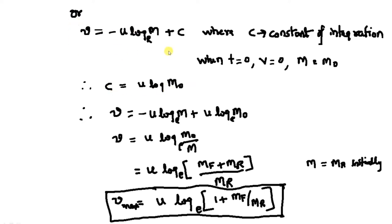You can get rid of this constant of integration by applying boundary conditions. Before launching, when t equals zero, the entire rocket is at rest so v equals zero, and the instantaneous mass of the rocket becomes m0, the initial mass. Substituting these boundary conditions, C equals u times log m0 to the base e. Therefore, replacing C, the velocity v equals u times log m0 divided by m to the base e. Here m0 is the initial mass made up of mass of the rocket plus mass of the fuel, giving v maximum equal to u times log of 1 plus mf over mr, to the base e.